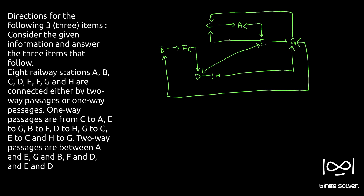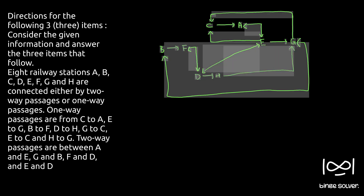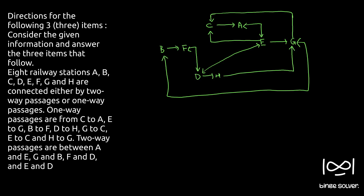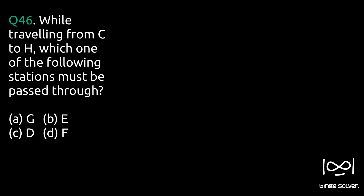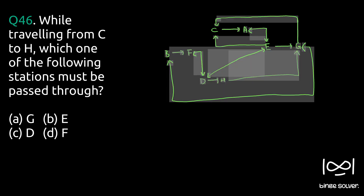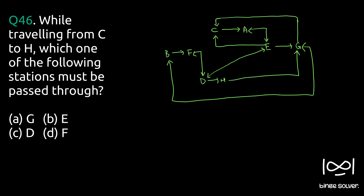This is the figure. Now we will go to the question. We will use this figure to answer all the questions. Question 46: while traveling from C to H, which one of the following stations must be passed through?